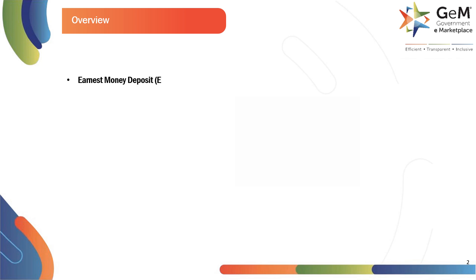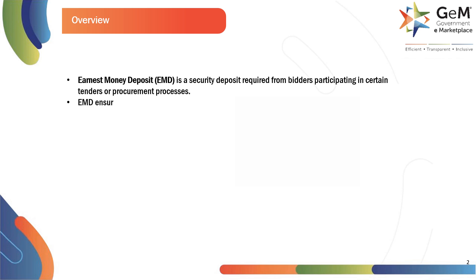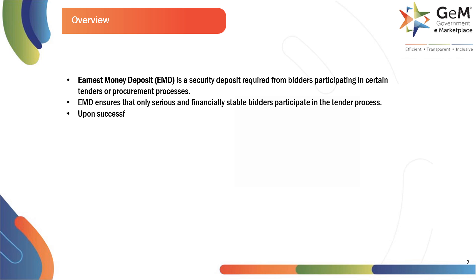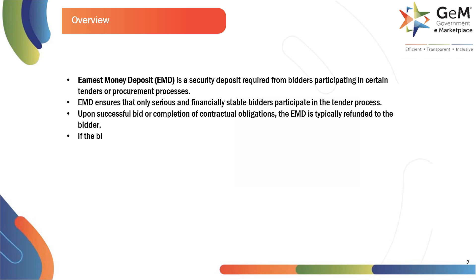Earnest Money Deposit, EMD, is a security deposit required from bidders participating in certain tenders or procurement processes. EMD ensures that only serious and financially stable bidders participate in the tender process. Upon successful bid or completion of contractual obligations, the EMD is typically refunded to the bidder. If the bidder fails to fulfill their obligations, the EMD may be forfeited.